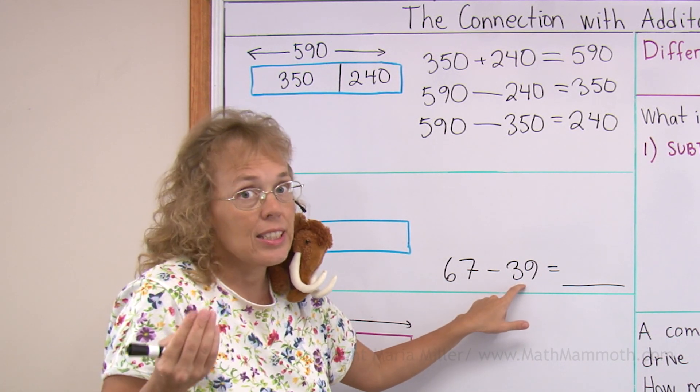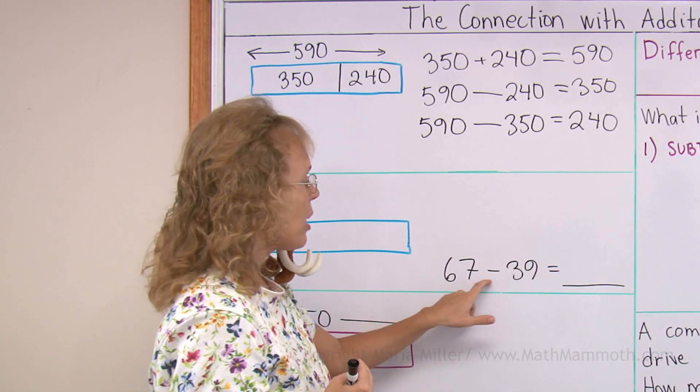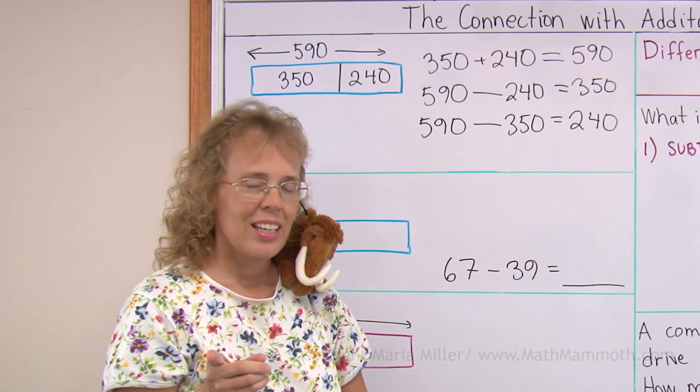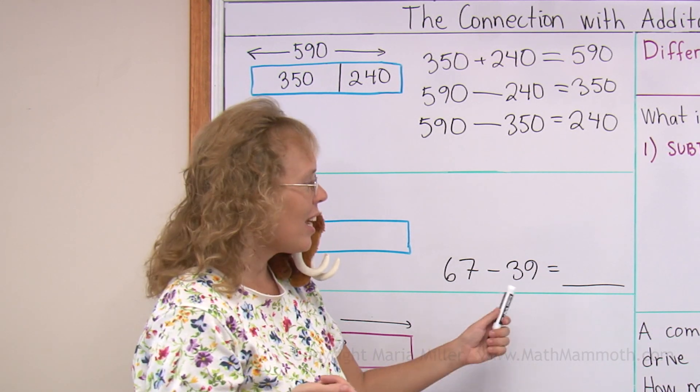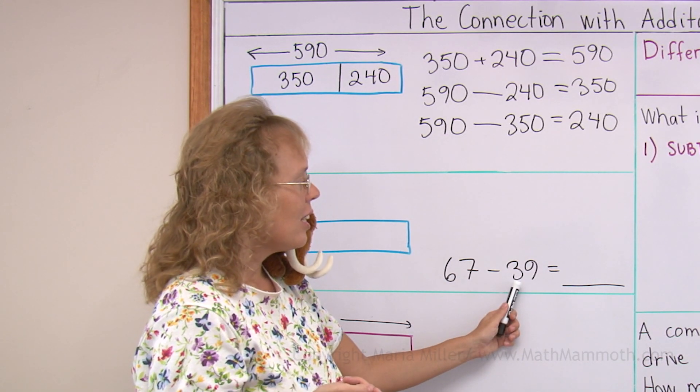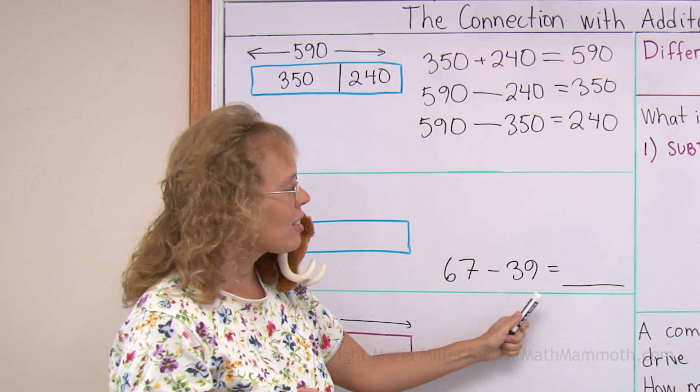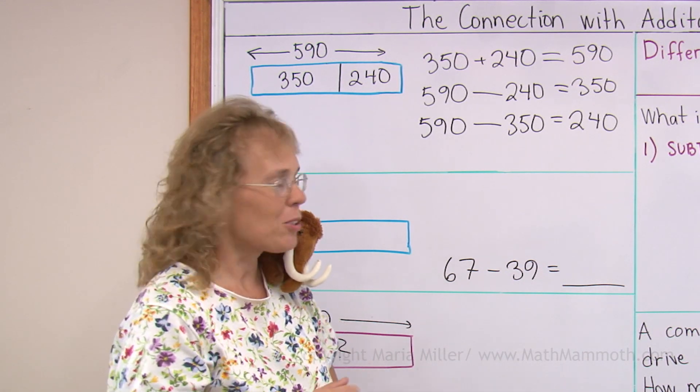Think of 40. 40 is an easy number. 67 minus 40 would be 27, but I subtracted one too much. I subtracted 40 and I should have subtracted 39, so the answer is one more than 27 or 28.